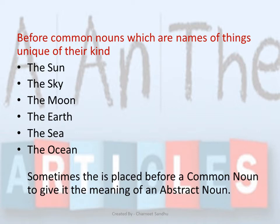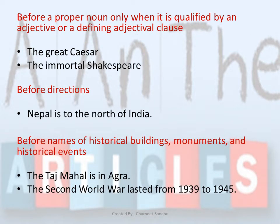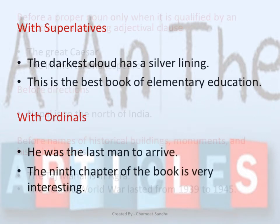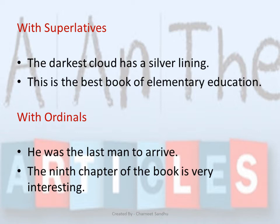We use 'THE' before common nouns which are names of things unique of their kind — for example: the sun, the sky, the moon, the earth. We also use 'THE' before a proper noun when it is qualified by an adjective or a defining adjectival clause — for example: 'The Great Caesar' or 'The Immortal Shakespeare'. We use 'THE' before directions, names of historical buildings, monuments and historical events, and also with superlatives and ordinals such as darkest, most beautiful, first, second, third, last, etc.